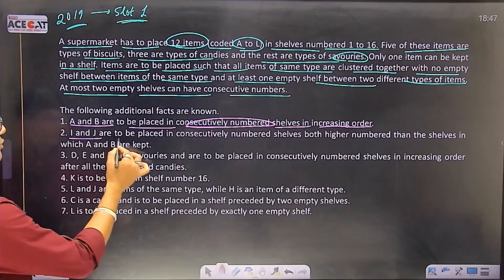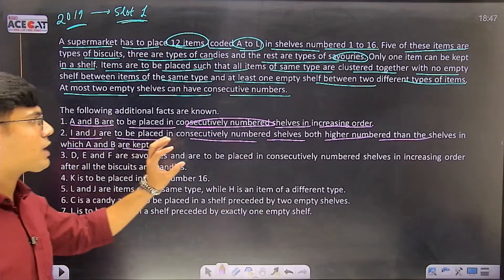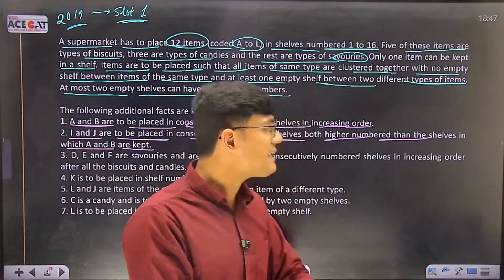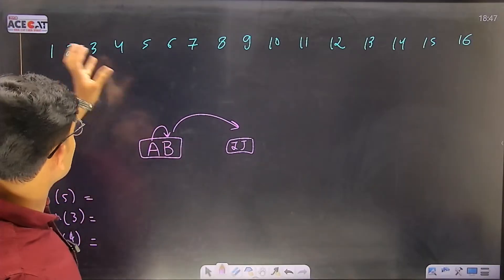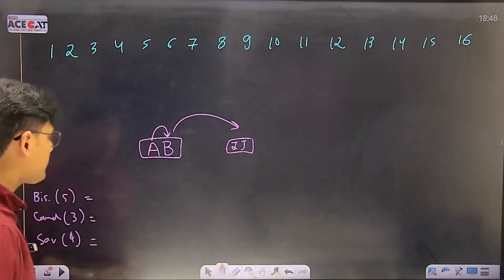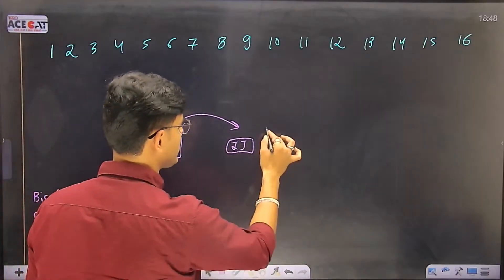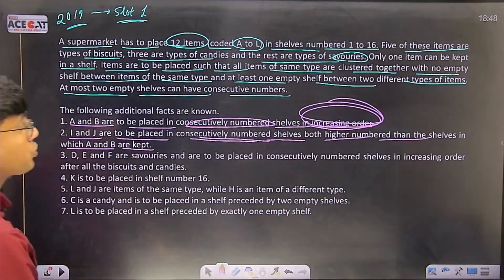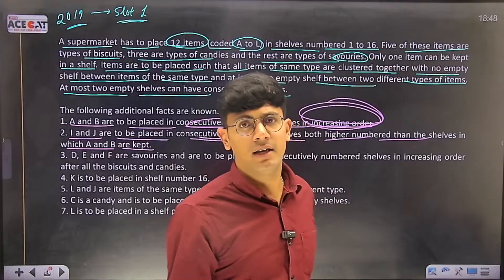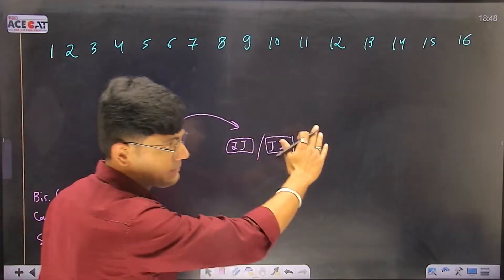I and J are to be placed in consecutively numbered shelves, but in higher-numbered shelves than where A and B are placed. I and J form a consecutive block in higher shelf numbers than A and B. Also, note that in the A-B clue it said increasing order, but for I and J that is not specified - so this could be I-J or J-I, we don't know the correct order.